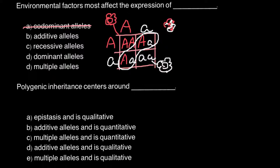When we have answer D — dominant alleles — we have simple Mendelian genetics where two heterozygous parents would be red-flowered because the dominant allele is dominant over the recessive. The flowers of the parents would both be red, and three out of four progeny would be red-flowered and one out of four white-flowered. Environmental factors don't affect dominant alleles here, so we can cross out this answer.